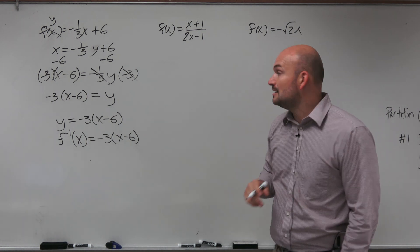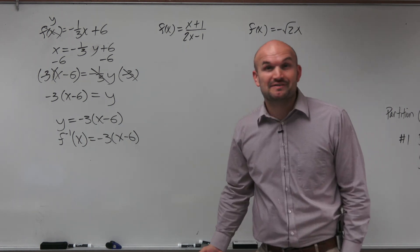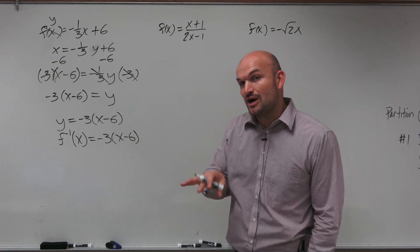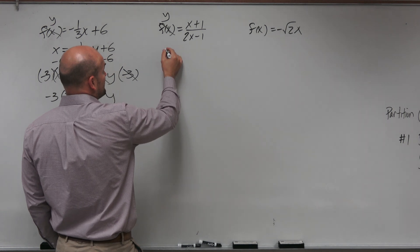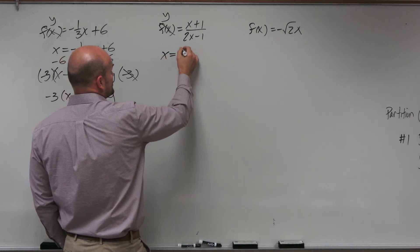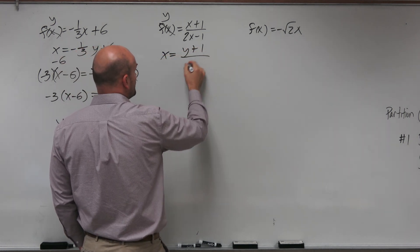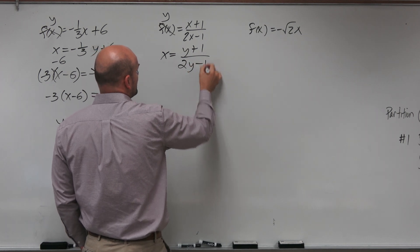In the next example, we have a couple of issues with this one. But again, we're going to start with what we know, which is first to replace the f of x with y, then we swap the variables. So we have x is equal to y plus 1 all over 2y minus 1.